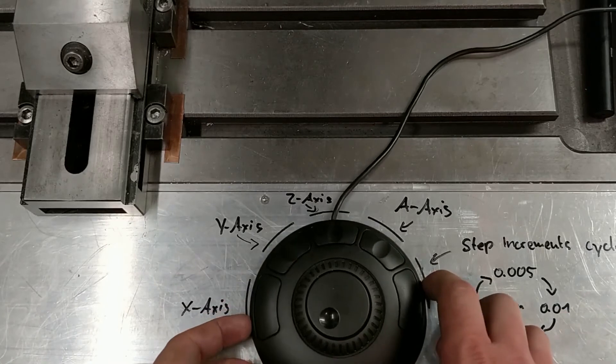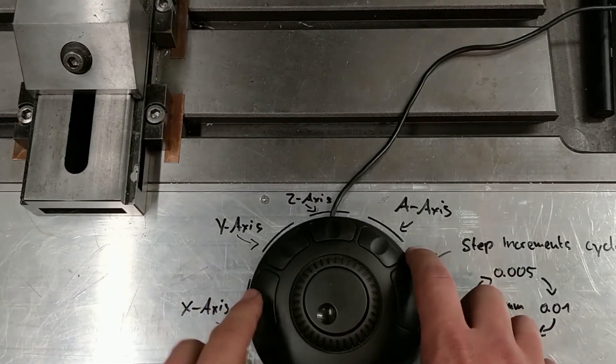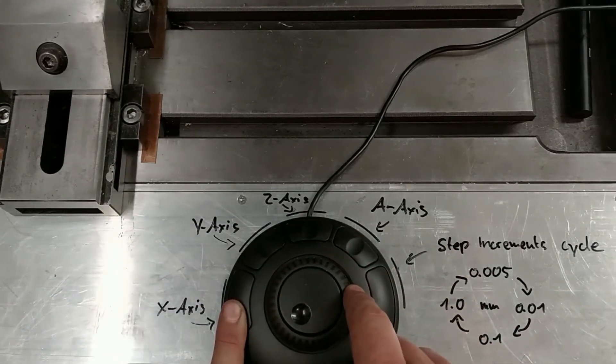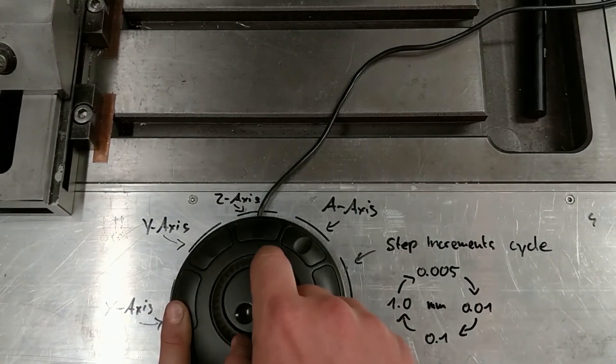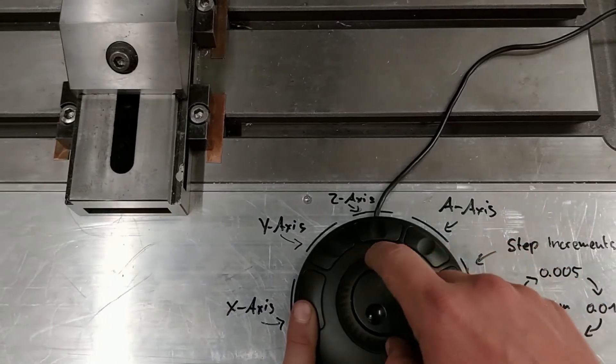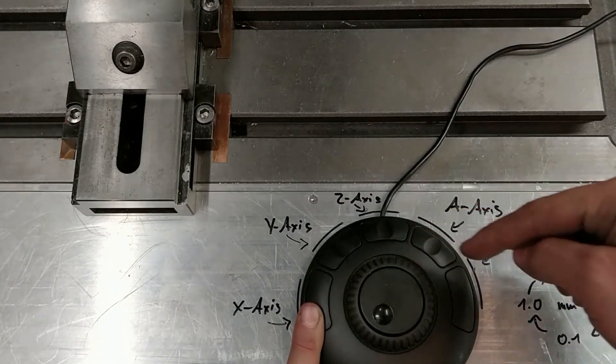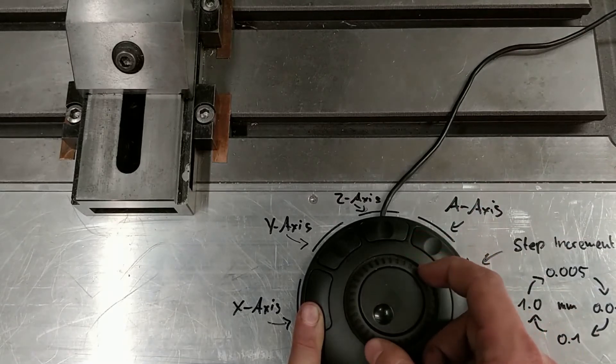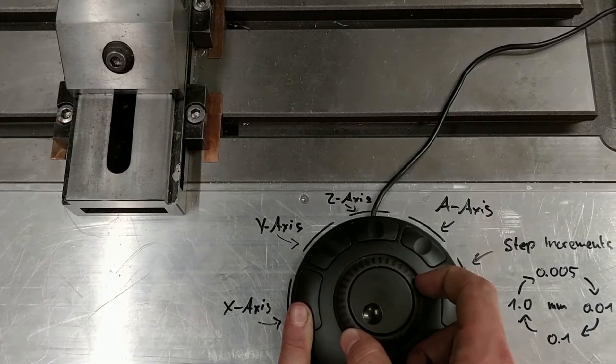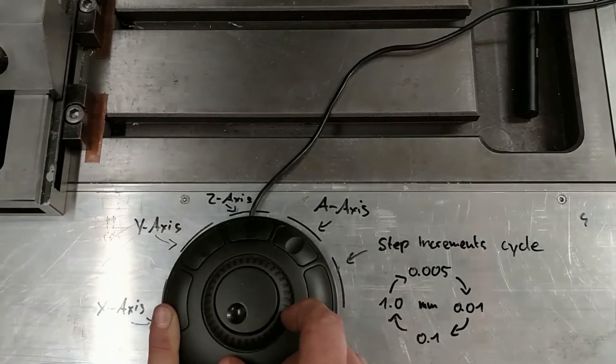So I can show you. We just have to hold down the button for the axis. And if we turn the outer ring, you can hear the different steps. So it's the 1st, 2nd, 3rd, 4th, 5th, 6th, and 7th.